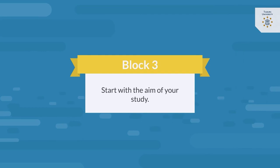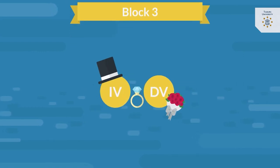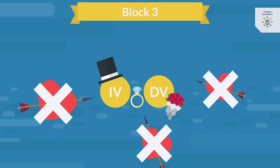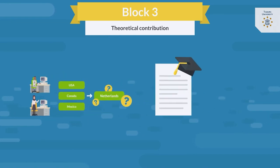Now we move to block 3. In this block, you start with the aim of your study. In this case, you want to study the direct relationship between your two variables, so no moderators or mediators. Next, you present the theoretical and practical contribution of your study. For the theoretical contribution, you can refer to your gap. By filling in this gap, you extend the research on the relationship between the two variables.